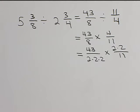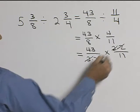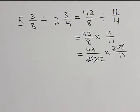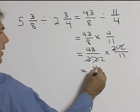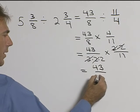Now what can we cancel? Well, we have two pairs of twos that we can cancel, and in the numerator we're left with forty-three over two times eleven is twenty-two.